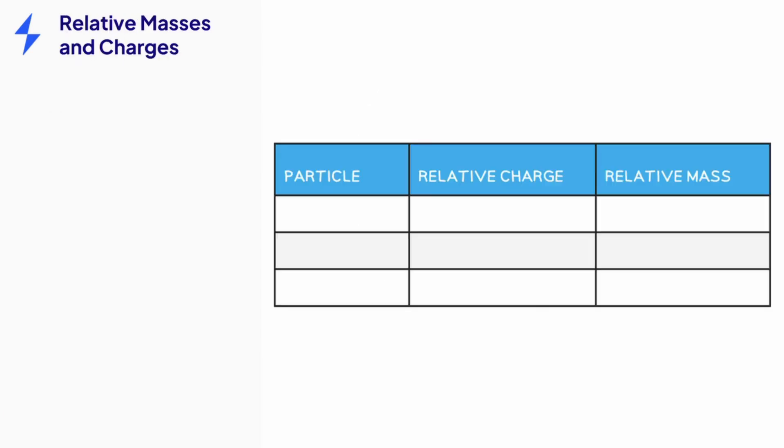Protons, neutrons and electrons are all incredibly small. Their masses and charges are also very small. We describe the masses and charges relative to each other. That's to avoid writing 27 zeros each time if we were to use kilograms.